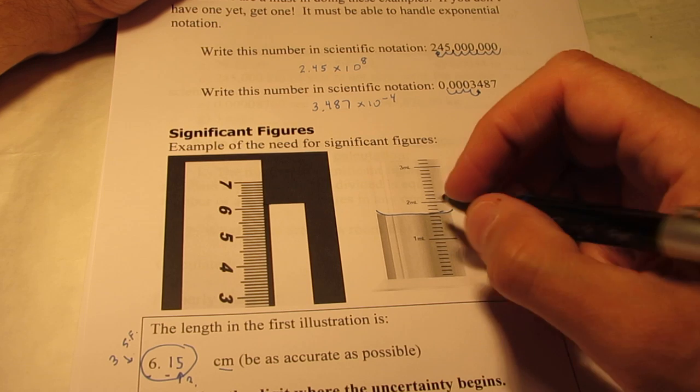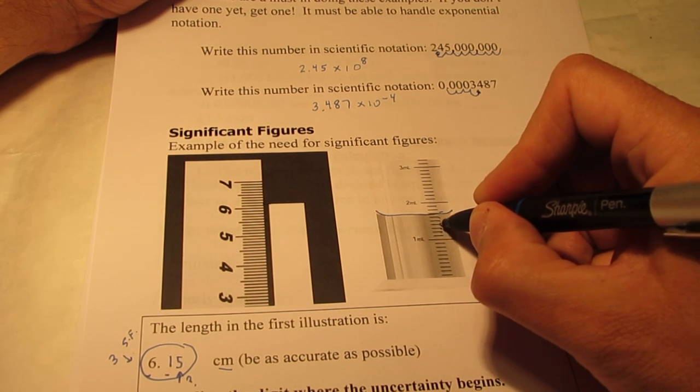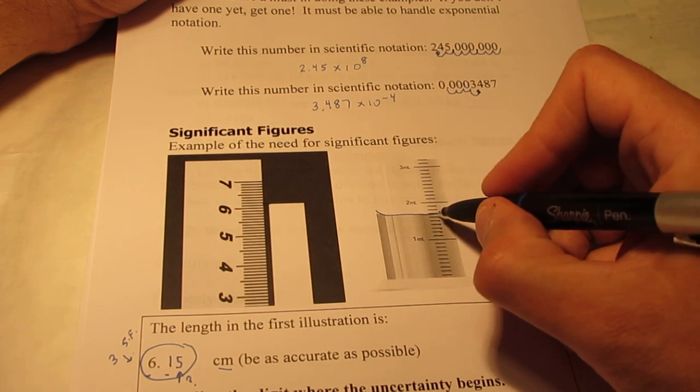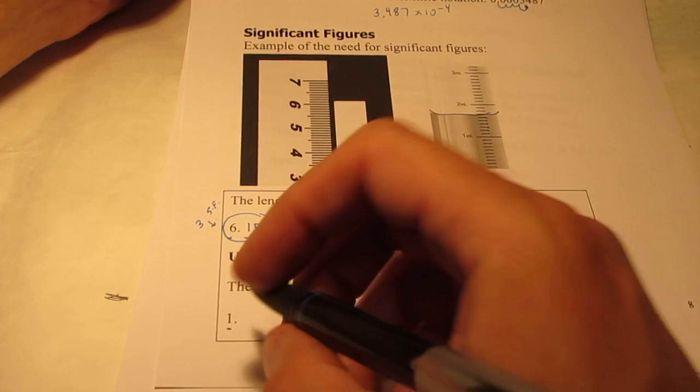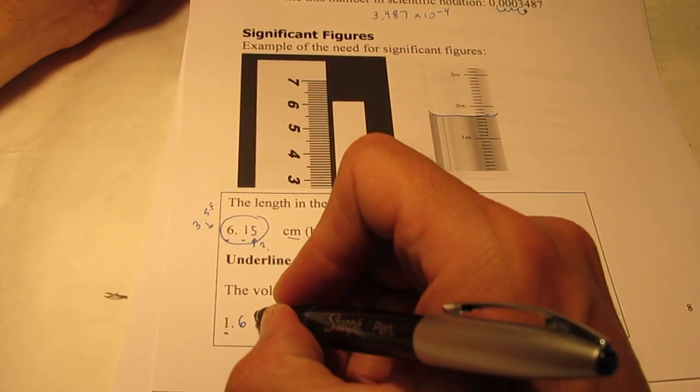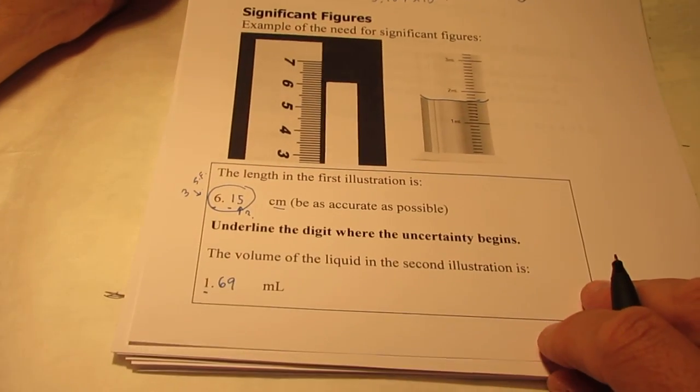Now, I know it's between one point six and almost one point seven. So, I'm going to write down one point six and I'm going to estimate one digit. I'm going to call that one point six nine milliliters.